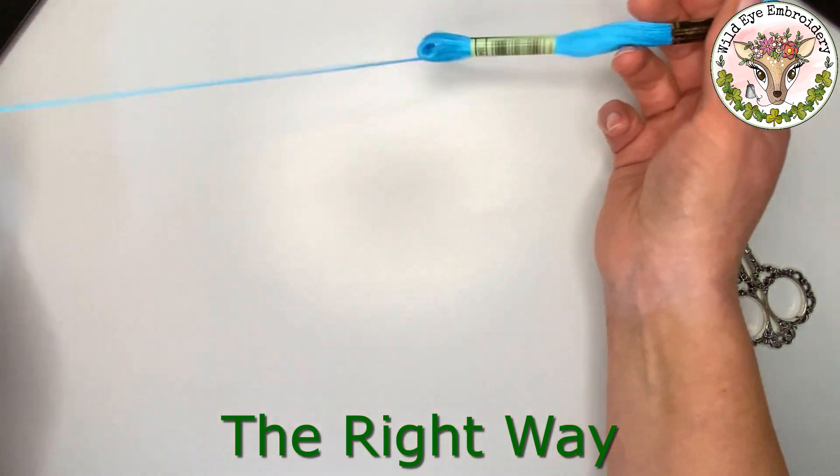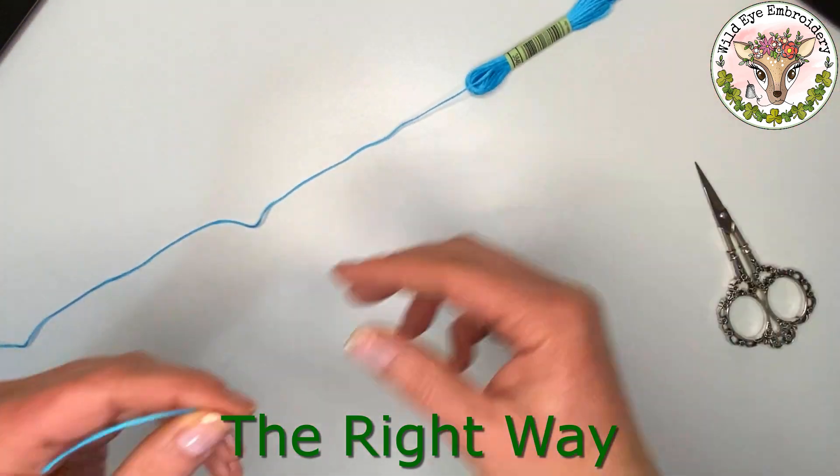So I'm now going to show you the right way. So once again I'm going to get a length of embroidery floss from my fingertip up to my shoulder, cut that.